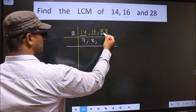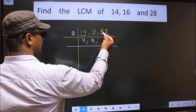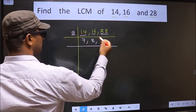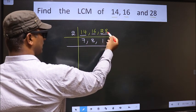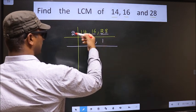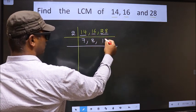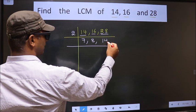First number 2. When do we get 2 in the 2 table? 2 ones 2. The other number 8. When do we get 8 in the 2 table? 2 fours 8.